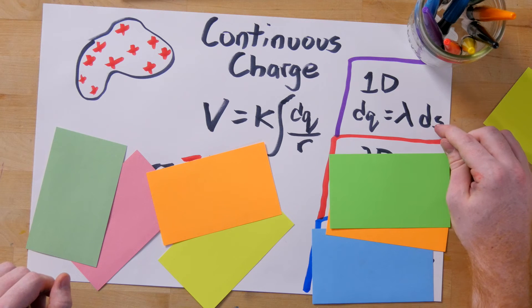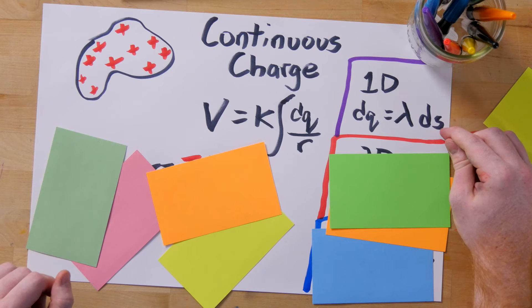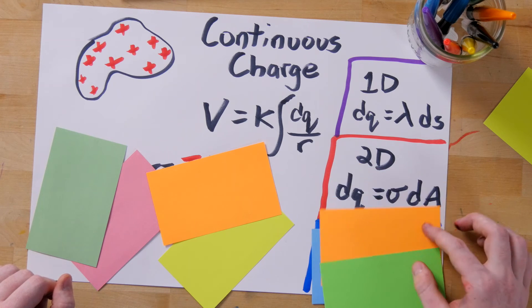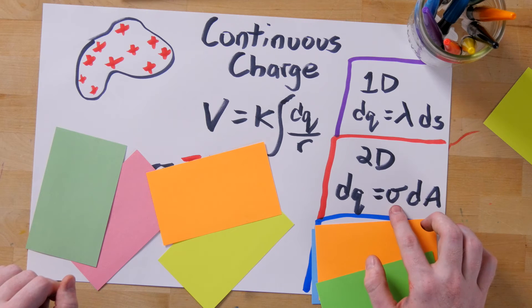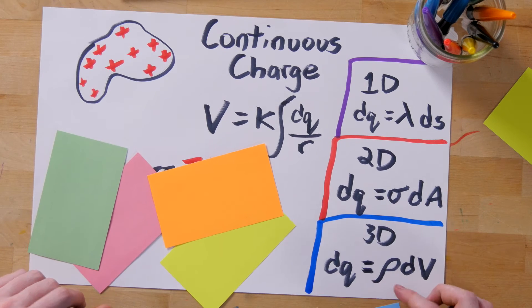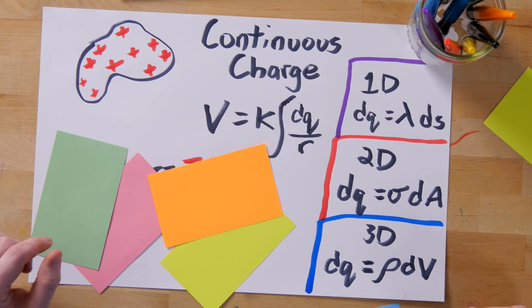For linear distribution, you have charge density lambda for the entire length. For a charge distribution over an area, you have sigma as charge density. For volume, we use rho for density. Using these densities, if we look at infinitely small lengths, areas, and volumes, we can describe the bits of charge dq.